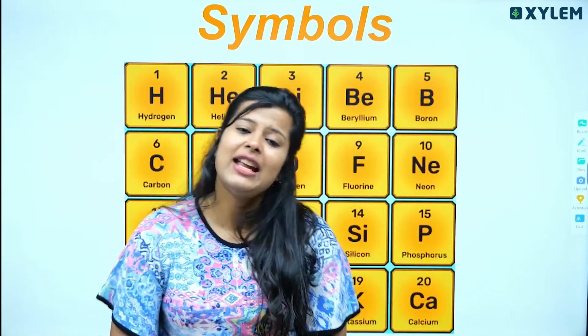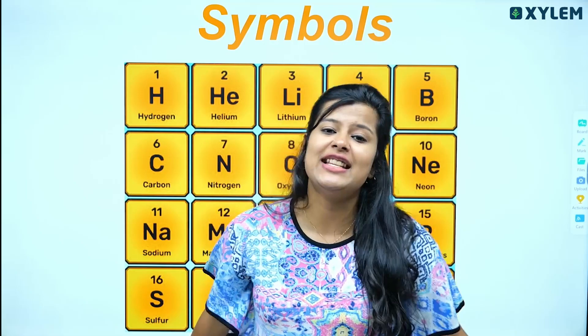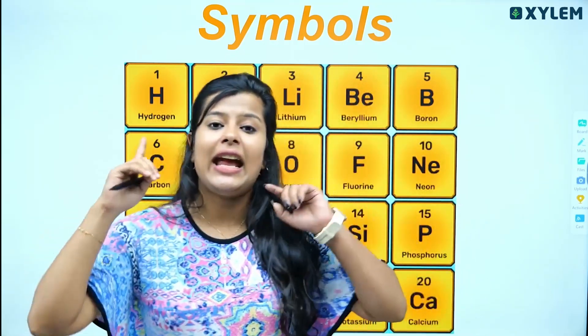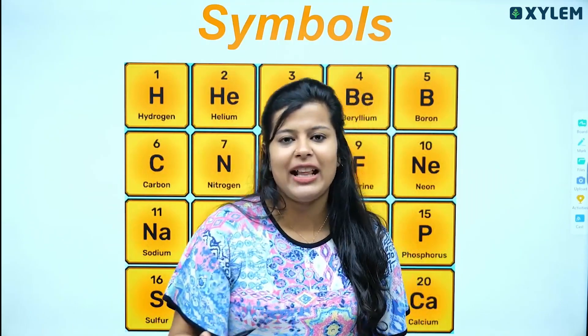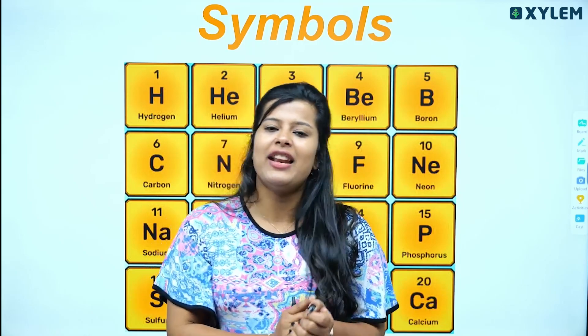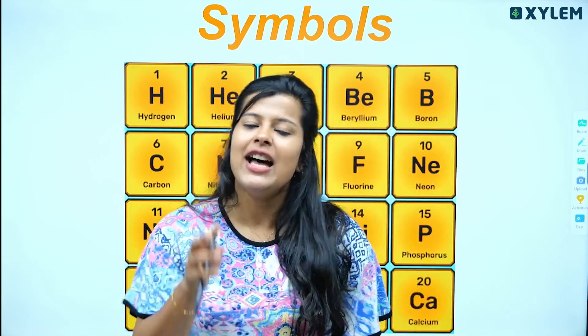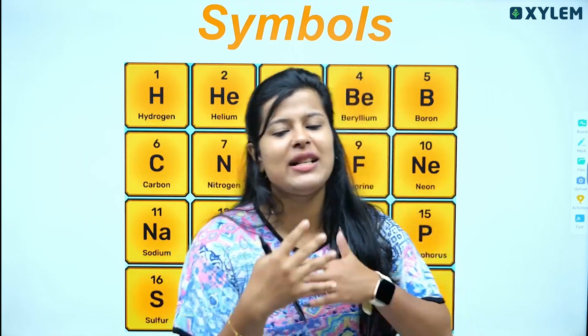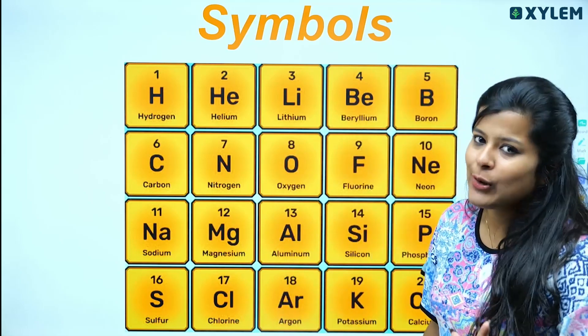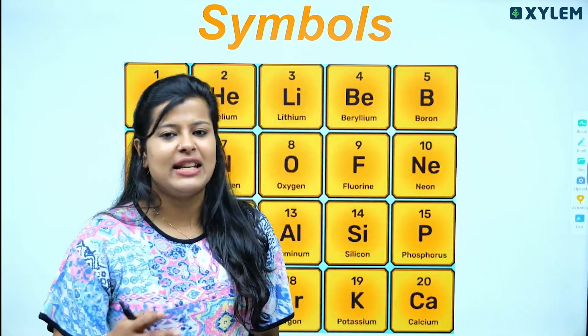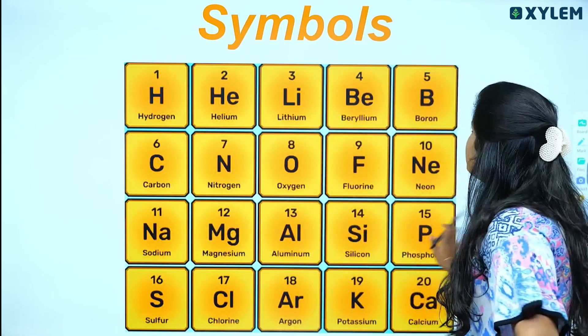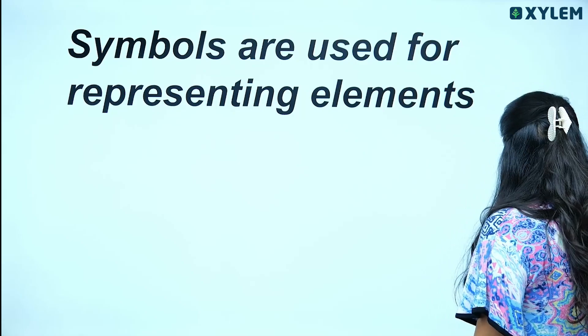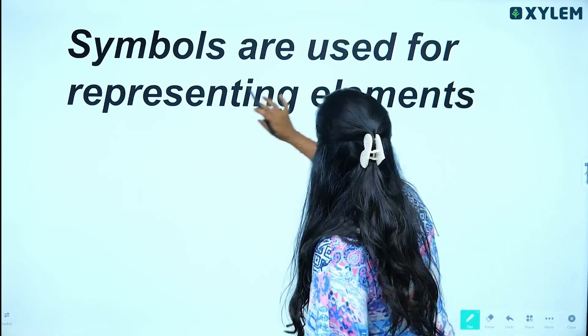We are going to discuss symbols. Symbols are used for representing elements. If you want to represent one element, we use symbols. Symbols represent the elements. There are a few rules and regulations for writing symbols. Let's see the first rule: symbols are used for representing elements.